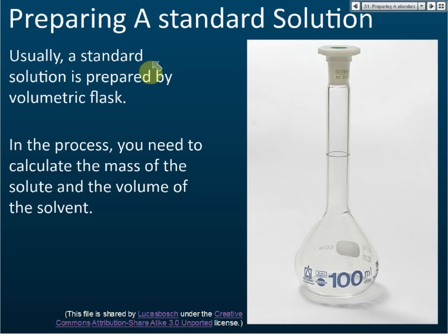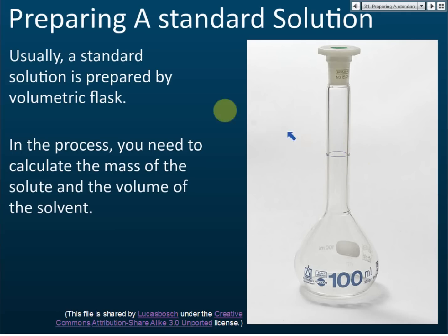A standard solution is usually prepared using a volumetric flask. This volumetric flask is labeled in ml — where ml is equal to a centimeter cube. This one is 100 ml, and you can see there is a mark here to show where the solution level should be at 100 ml. To prepare the solution, we add the solute inside first.